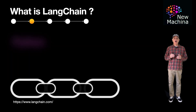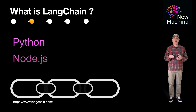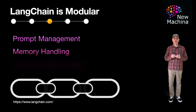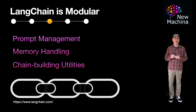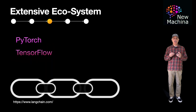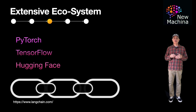LangChain has both Python and Node.js library implementations. The framework is built with modularity in mind, offering various components like prompt management, memory handling, and chain building utilities. LangChain supports interaction with popular machine learning frameworks and platforms, including PyTorch, TensorFlow, and Hugging Face.